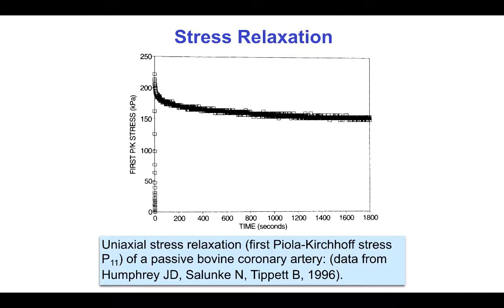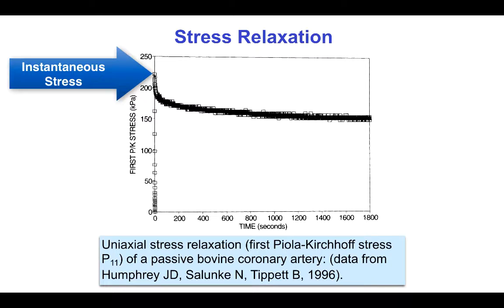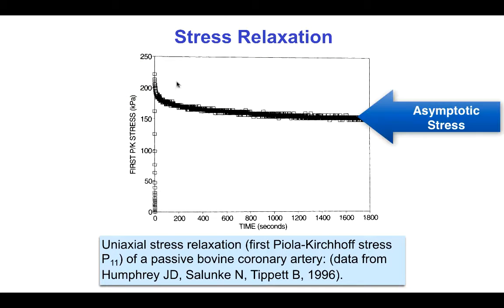Stress relaxation is seen in arteries like this sample of bovine coronary artery. Note that the instantaneous stress here is about 225 kPa, compared with an asymptotic stress of about 150 kPa, after about 30 minutes exposure to constant strain.